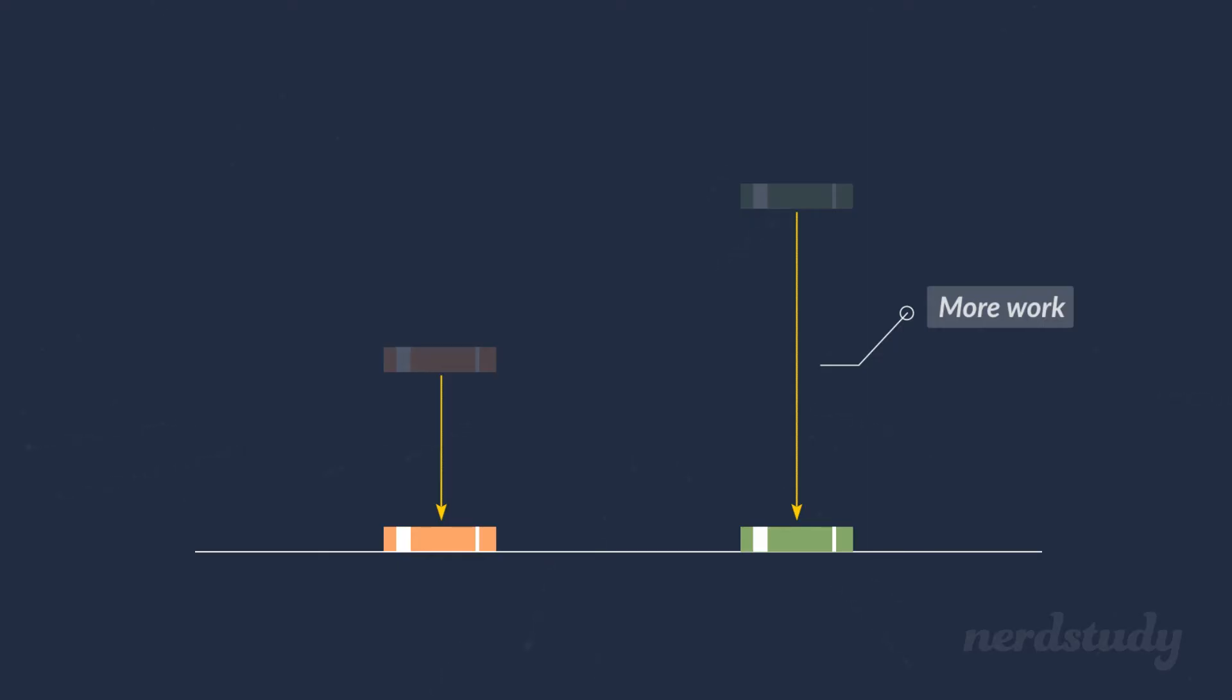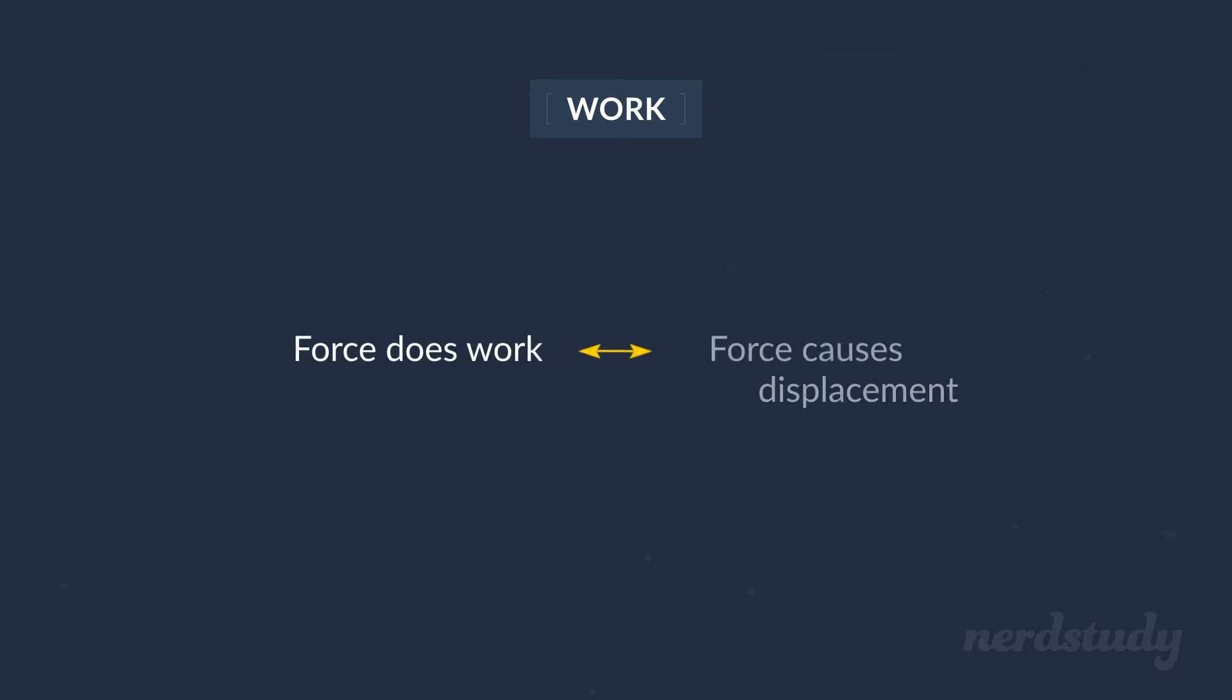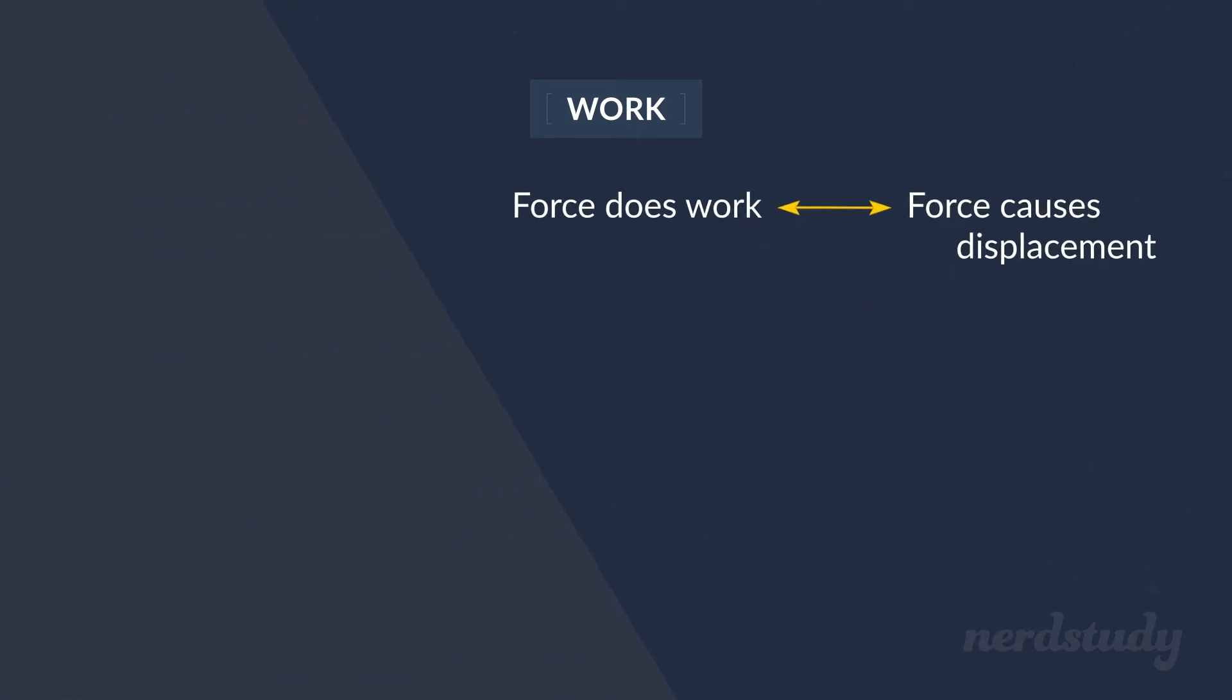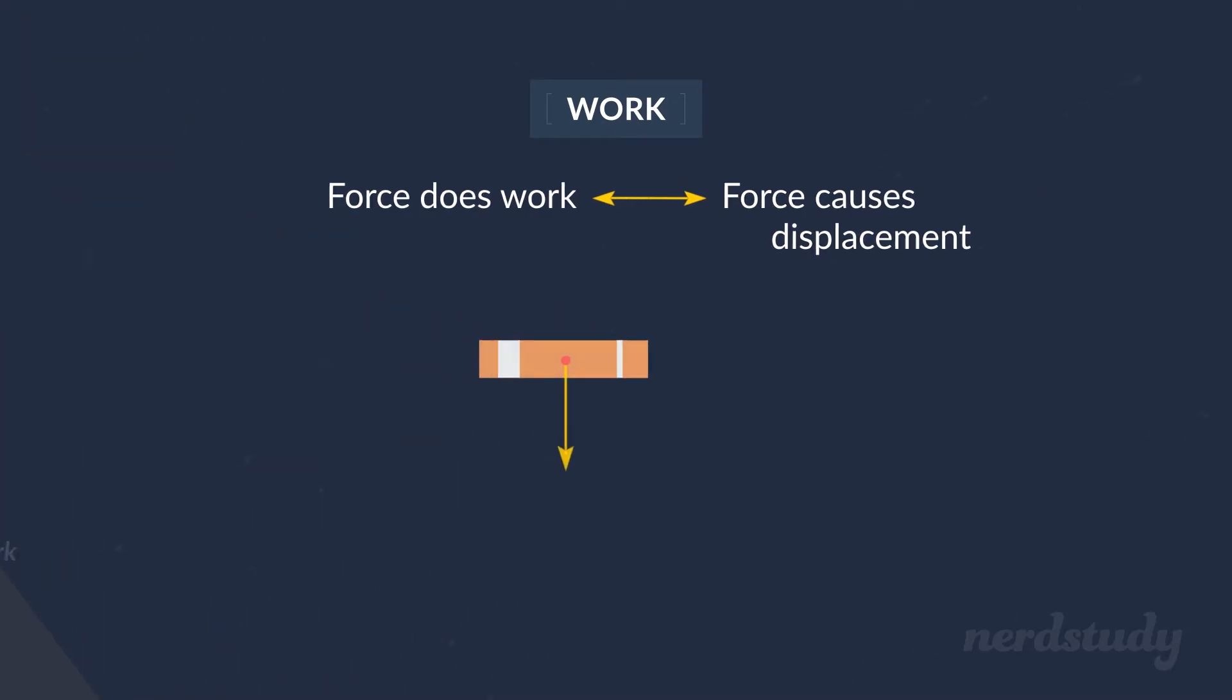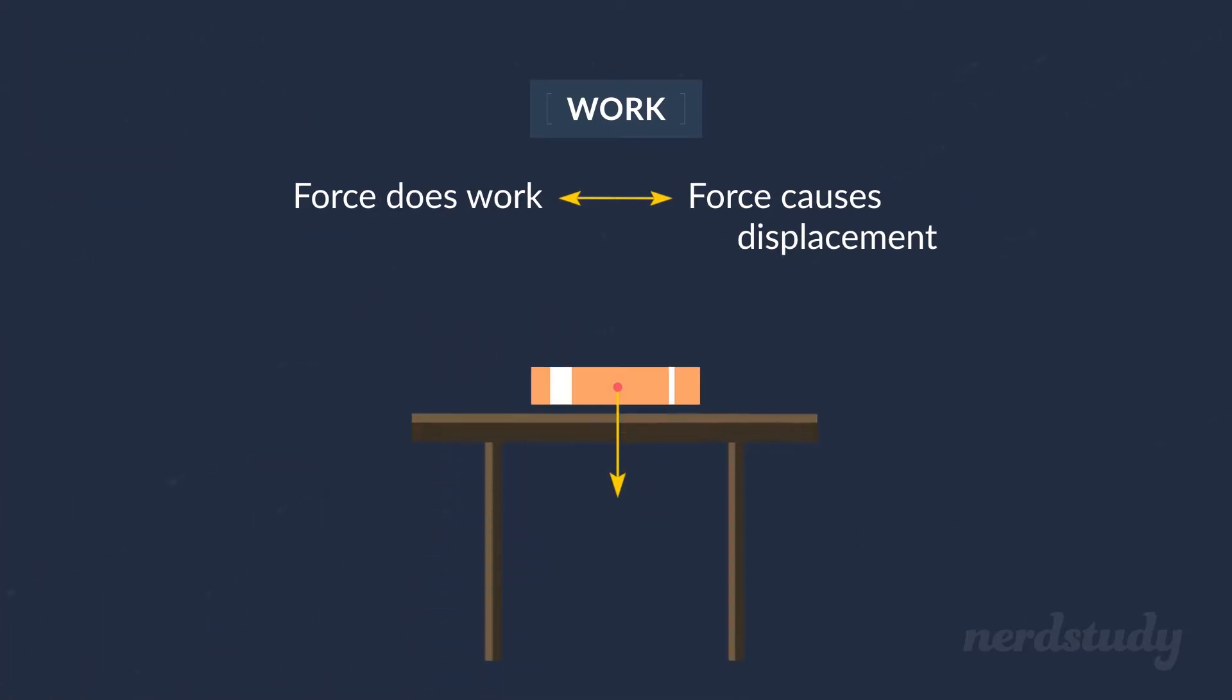So these kinds of ideas are the motivation for the concept of work in physics. Essentially, physicists would say that a force is performing work if it causes a displacement in an object. For example, when gravity causes a book to fall, we say that gravity performed work on the book. However, when the book is placed on a table, we say that gravity does not perform work on the book. That's because, even though gravity acts on the book, the book doesn't move. The displacement is zero. So work is a sort of measurement of how much a force actually affects an object.